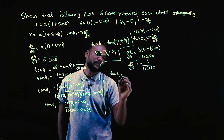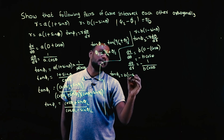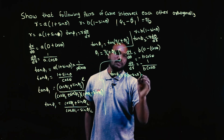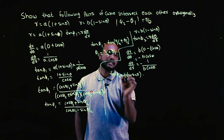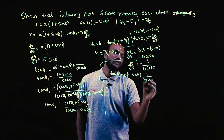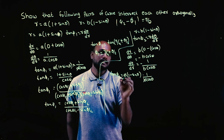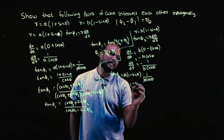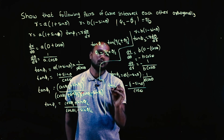So tan φ₂ is R into dθ/dR: that is b(1 − sinθ) times −1/(b cosθ). The b's cancel, giving tan φ₂ equal to −(1 − sinθ)/cosθ.